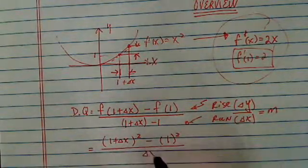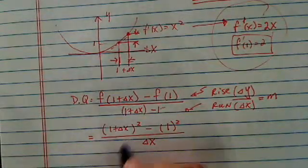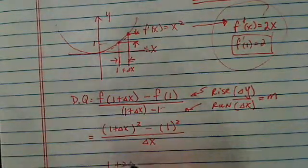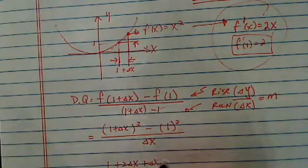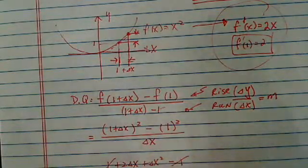On the bottom, I have delta x because 1 cancels out. Now, what I have to do is actually open it up. I have (1 plus delta x) squared minus 1. 1 and 1 cancels again, divided by delta x.